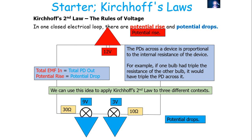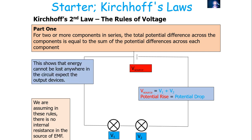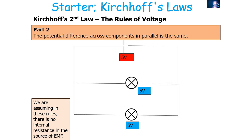We can take these laws and apply them in different contexts. The first idea is that for two or more components in series, the total potential difference across the components is equal to the sum of the potential differences across each component. Assuming no internal resistance, V source equals V1 plus V2. This shows that no energy is lost in your circuit except on the wanted output devices — in this case, two bulbs.